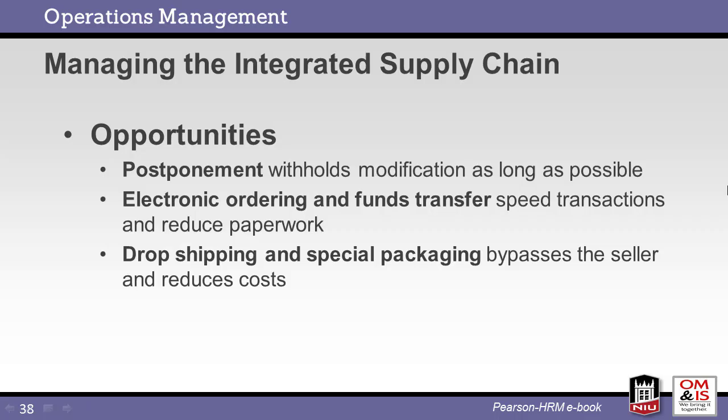Postponement finalizes the product as late as possible in the supply chain. For example, basic laptop computers are built and then finalized at the final distributor, where components, country-specific power supplies, and customer-specific software are added. The internet has enabled global data flow across the supply chain, including electronic ordering and funds transfer or payment. Dropshipping occurs when the manufacturer ships direct to the customer, bypassing the distribution channel. This method speeds delivery and reduces cost.